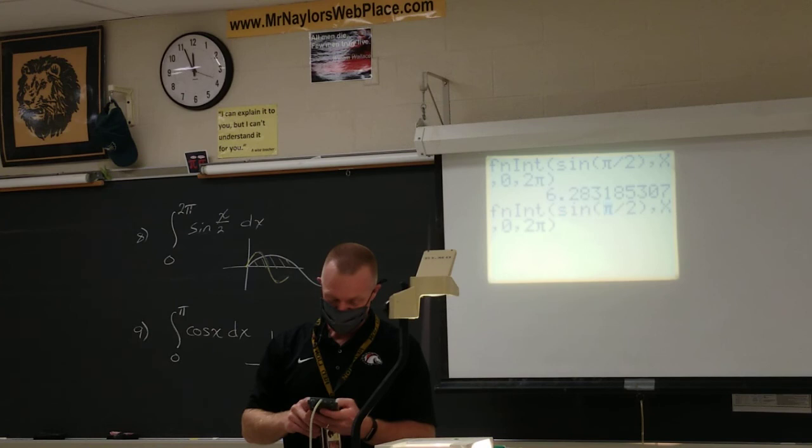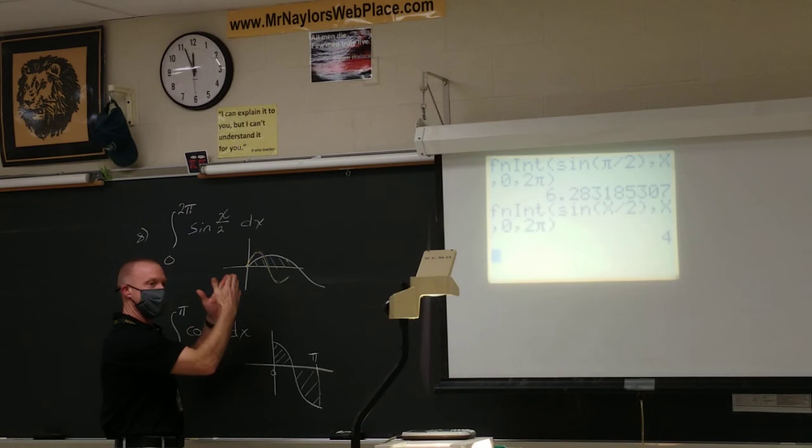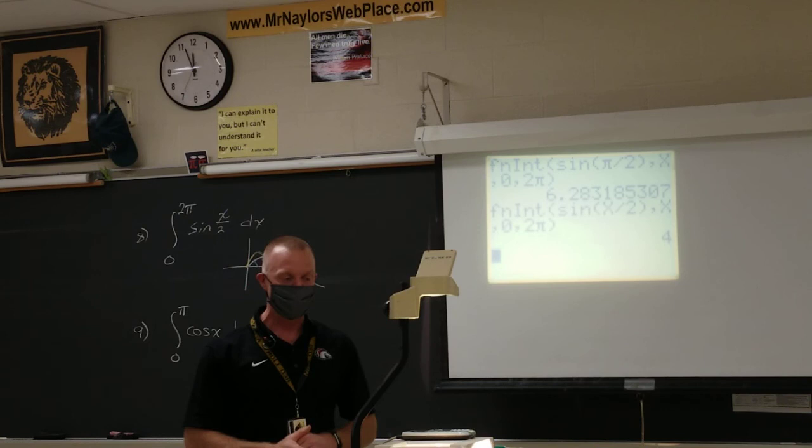All right, X over 2. Anyway, FNINT. And maybe you remember the answer to number 8. A lot of you got it right. Nice job. It was 4. Because what's really happening is my area is doubling since my length, my space is doubling. So it was X over 2, not pi over 2.